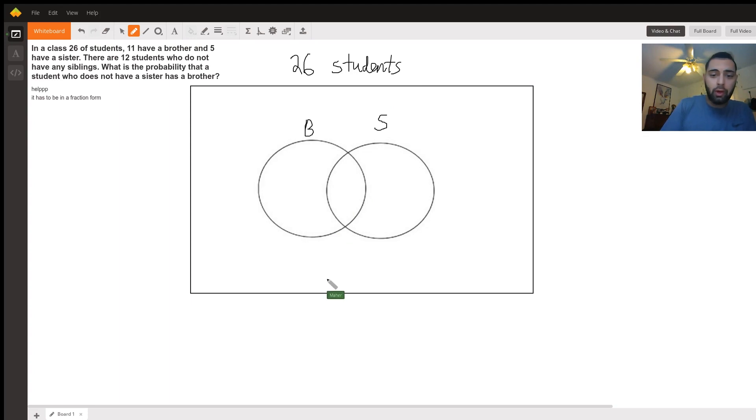Now, we know 12 have no siblings, so 12 would be outside of the circles. Now, they say there are 11 that have a brother, so there are 11 that fit in this circle, while there are 5 that have a sister and fit in this circle.